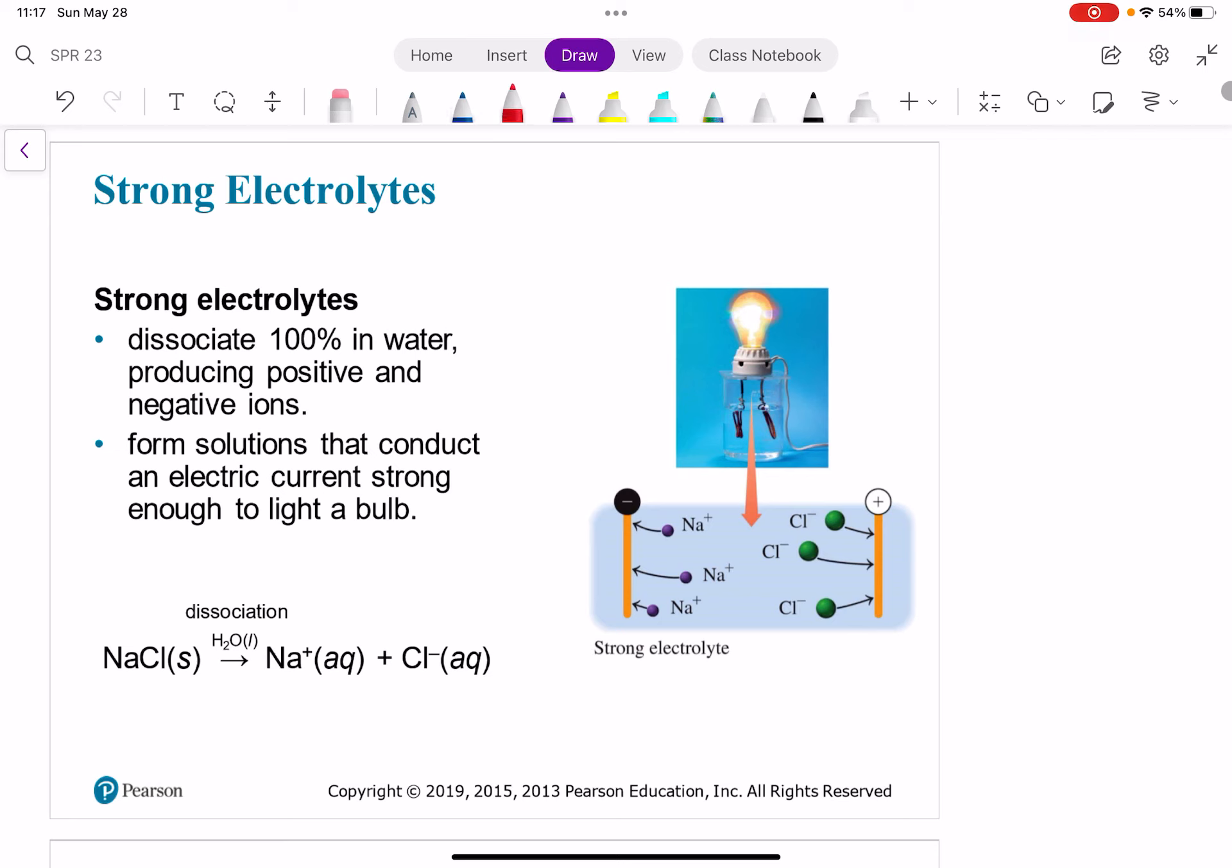So just like we talked about last video, NaCl, when we dissolve it in water, it completely dissociates or separates. You'll hear that term a lot, dissociate. It's kind of like separating completely. It dissociates 100% in water, and you get your sodium ions and your chloride ions kind of floating around in the water. Remember, those water molecules kind of surround each of those ions in your crystal, and they pull them apart.